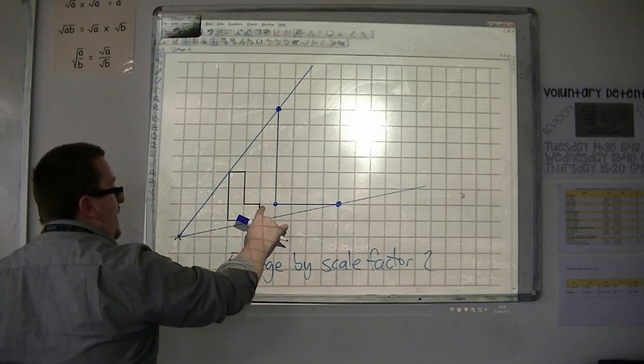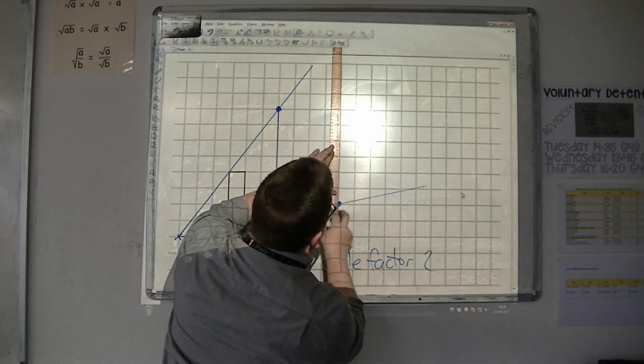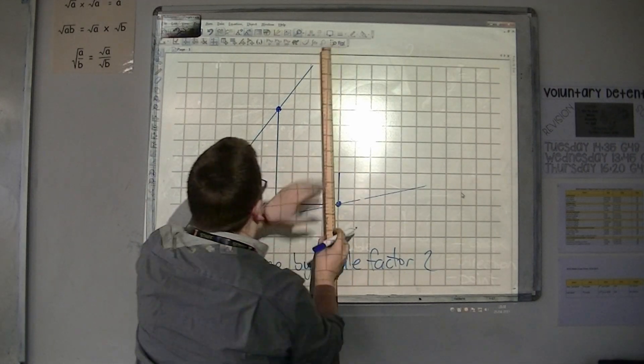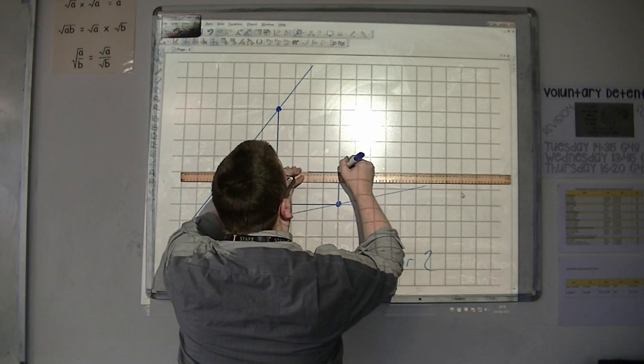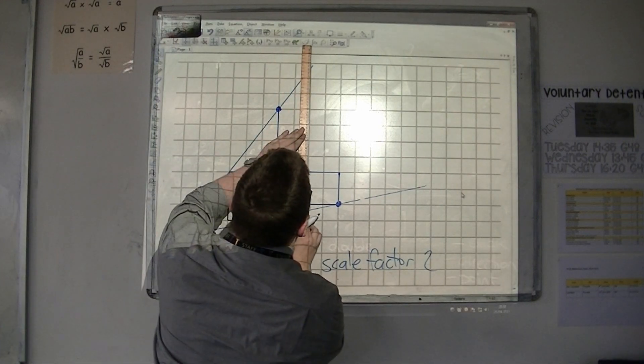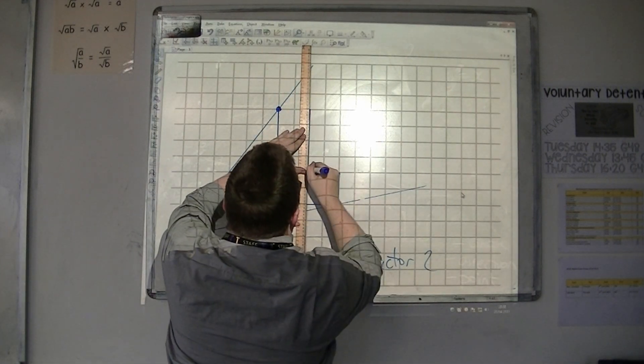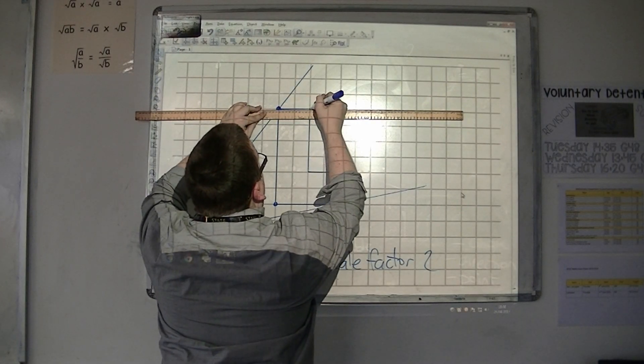Now that length is one here, so it needs to be doubled. So that will be now two high. That's one along, so it's now two along. This is two up, so it needs to be four. And finish off the shape like so.